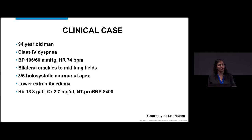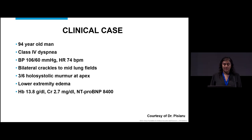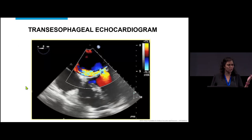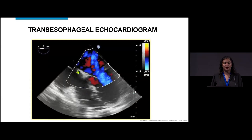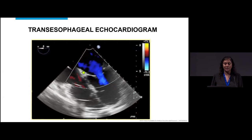We're going to start with a clinical case. This is a 94-year-old gentleman with class IV dyspnea. Blood pressure is okay, heart rate 74, crackles in both lung fields, a holosystolic murmur at the apex, lower extremity edema, and unfortunately an elevated creatinine and elevated NT-proBNP. He went to TEE, which shows a large jet of eccentric mitral regurgitation coming all the way around.